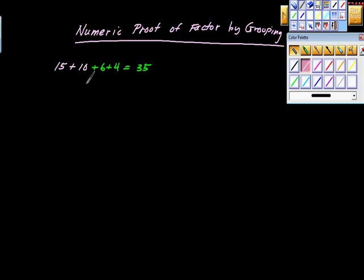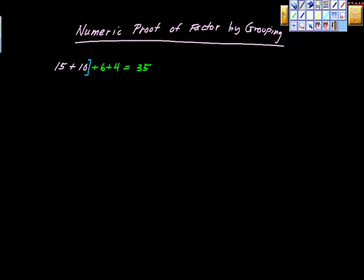So all I'm going to do is this. I'm going to ask myself, is this still true? If I take 15, if I add it this way, if I added the 15 plus the 10 first, and then I added the 6 plus the 4 second, would that still equal 35? And I think it would because 15 plus 10 is 25.